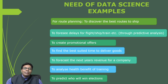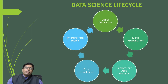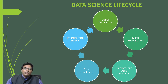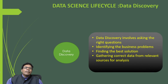The data science life cycle has five phases: data discovery, data preparation, exploratory data analysis, data modeling, and interpreting the results. After interpretation, results may feed back into the cycle. These are the different steps or process phases in the data science life cycle.